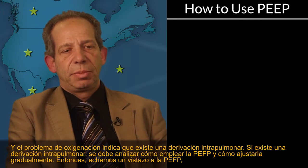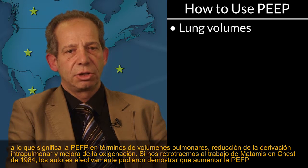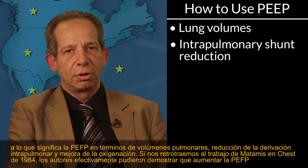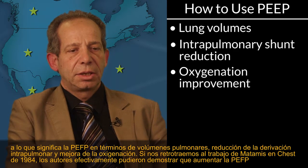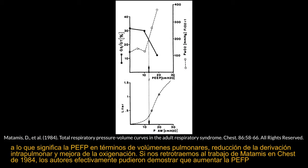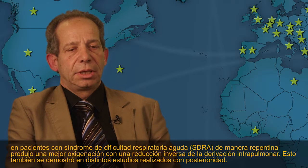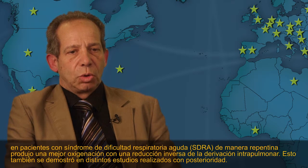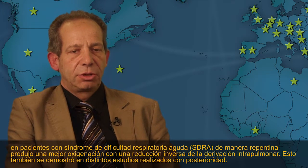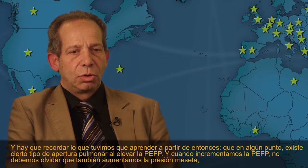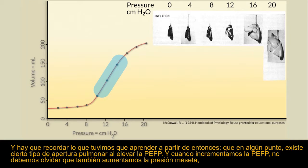Let's have a look at PEEP—what PEEP means in terms of lung volumes, intrapulmonary shunt reduction, and oxygenation improvement. If you go back to Matami's work in CHEST in 1984, they could show that increasing PEEP in patients with ARDS led to an improvement in oxygenation and, vice versa, a reduction of intrapulmonary shunt. This was confirmed in subsequent studies.